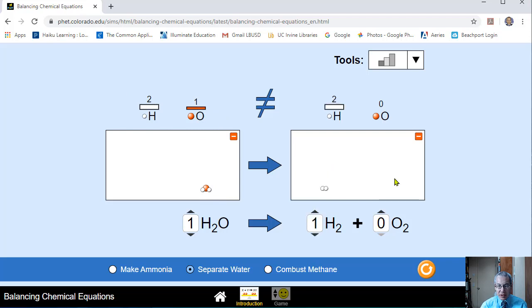How about I do this? So this requires you to look back and forth from left to right, which is more realistic. When you do this in real life, you have to be able to count atoms and look back and forth from left to right. The hydrogen right now is balanced. Can I make the oxygen balanced?